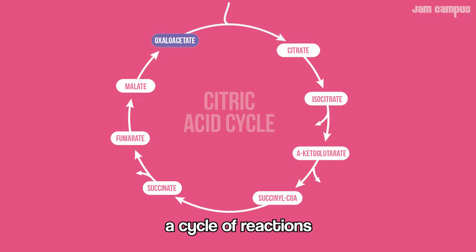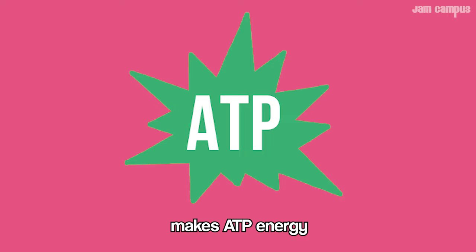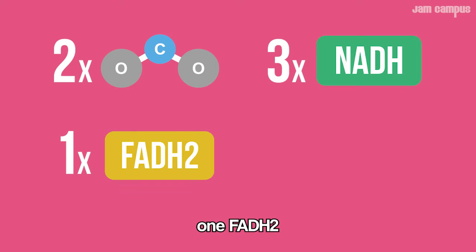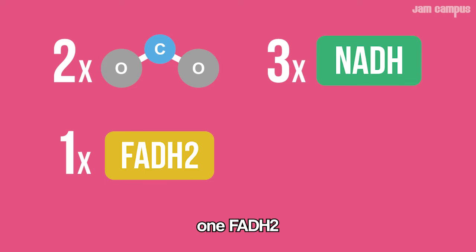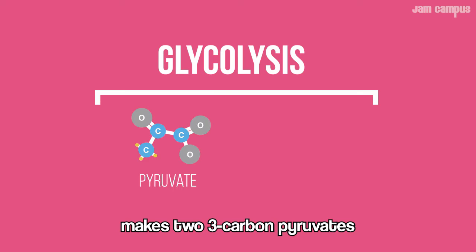In mitochondria, cycle of reactions churns the foods you eat — makes ATP energy. 2 CO2 are made, and 3 NADH, 1 FADH2, and 1 ATP energy. After glycolysis, ETC happens. Cycle of reactions makes ATP energy — 2 CO2 are made, and 3 NADH, 1 FADH2, and 1 ATP energy.